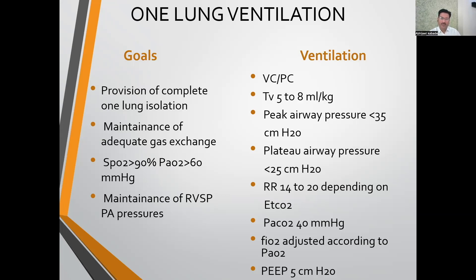All off-pump CABGs done through left lateral thoracotomy require left lung isolation, so one lung ventilation is mandatory. Goals include: complete lung isolation, maintaining adequate gas exchange — saturation above 90%, CO2 around 40 — and maintaining pulmonary artery pressure and right ventricular systolic pressure, since one lung ventilation increases RV afterload and PA pressure. Most strategies advocate volume control or pressure control — pressure control especially for lung injuries — with tidal volume of 5 to 8 ml/kg, peak airway pressure less than 35, plateau pressure less than 25, respiratory rate 14 to 20, and PEEP of at least 5 (except in COPD patients).